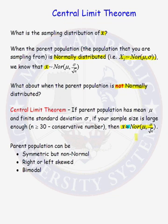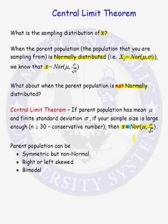It can be approximated by this normal distribution. It does not matter what the distribution of our parent population is. The parent population could be symmetric but non-normal. It could be right or left skewed. It could be bimodal. The Central Limit Theorem says that as long as the sample size is large enough, eventually the distribution of the sample mean will become approximately normal.